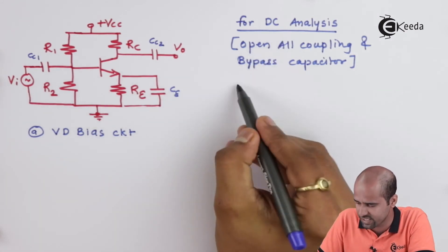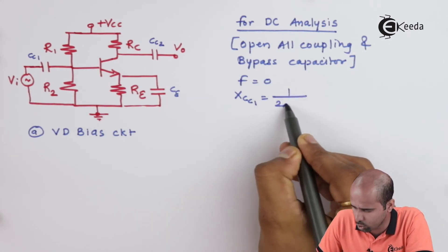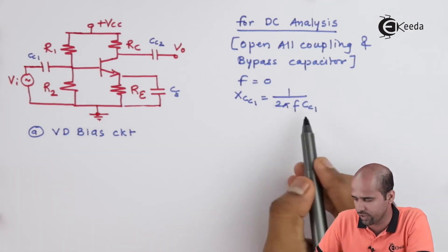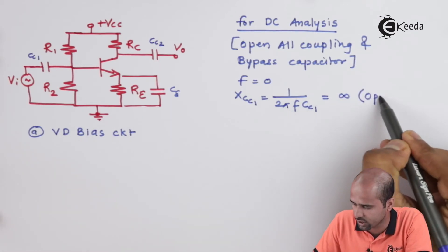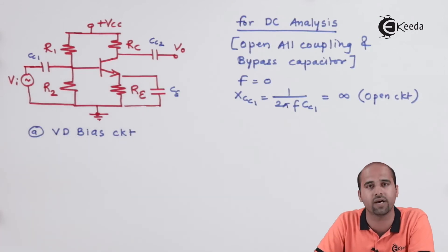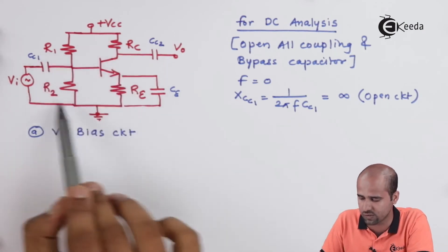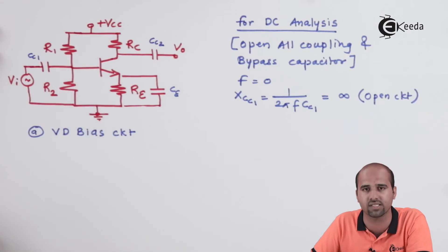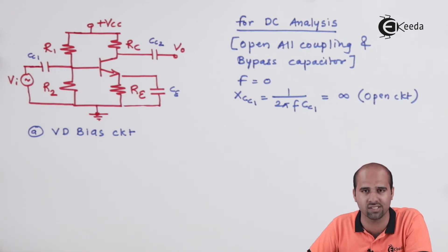Why do we open the capacitors? As far as DC is concerned, frequency equals zero. The capacitive reactance XC_C1 = 1 / (2πf · CC1), so if frequency equals zero, XC_C1 becomes infinite, and infinite reactance means open circuit. That is why we apply open circuit to the capacitors. When capacitors are open-circuited, we are left with only the resistances, the transistor, and the DC supply VCC, and that gives us the Q point — the reference point.